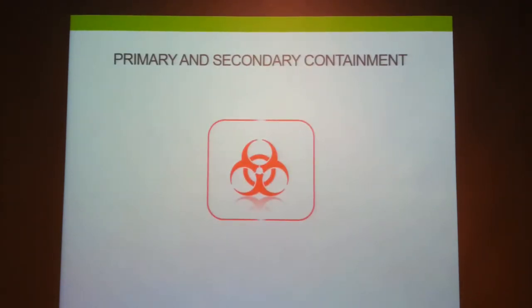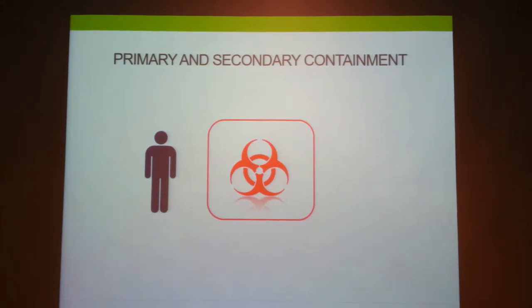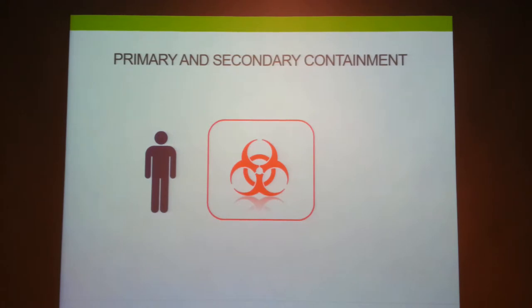When we refer to containment there are two key terms. The first is primary containment. Assuming the rectangle represents the germplasm which needs to be contained, primary containment refers to the protection of the personnel working with that germplasm. For instance, a plant may be modified to carry a transgenic virus that is also a human pathogen, so you need to protect yourself from it. Primary containment includes the use of personal protective equipment such as respirators, masks, and gloves.